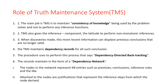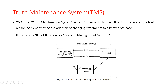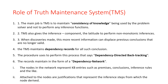The sixth role: the TMS maintains records so that the inference engine always knows its current belief set. The records are maintained in the form of a dependency network. The nodes in the network represent knowledge base entries such as premises, conclusions, inference rules, and the like. Attached to the nodes are justifications that represent the inference steps from which the nodes derive. These are the roles of the truth maintenance system.